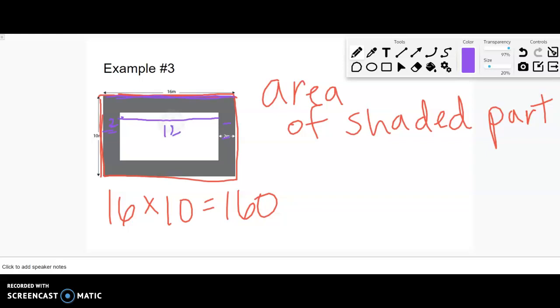I can do the same thing for the height. If this whole thing is 10 and this part up here is 2 and this part down here is 2, then 10 minus 2 minus another 2 is going to give me 6. Now I have the dimensions for that inner rectangle and I can find the area: 12 times 6, which gives me 72.